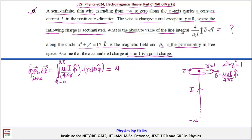So this will give you mu naught I over 4 pi r, and d phi will give you 2 pi. So this will cancel out, giving mu naught I over 2.